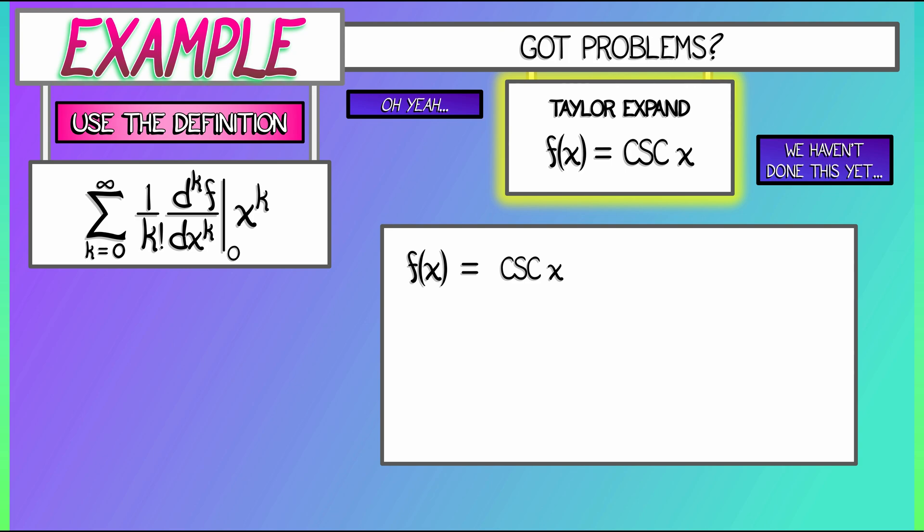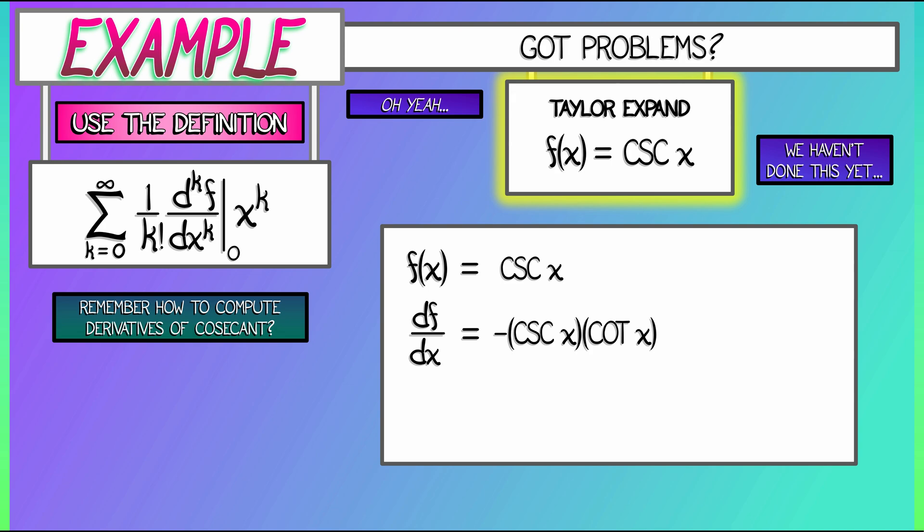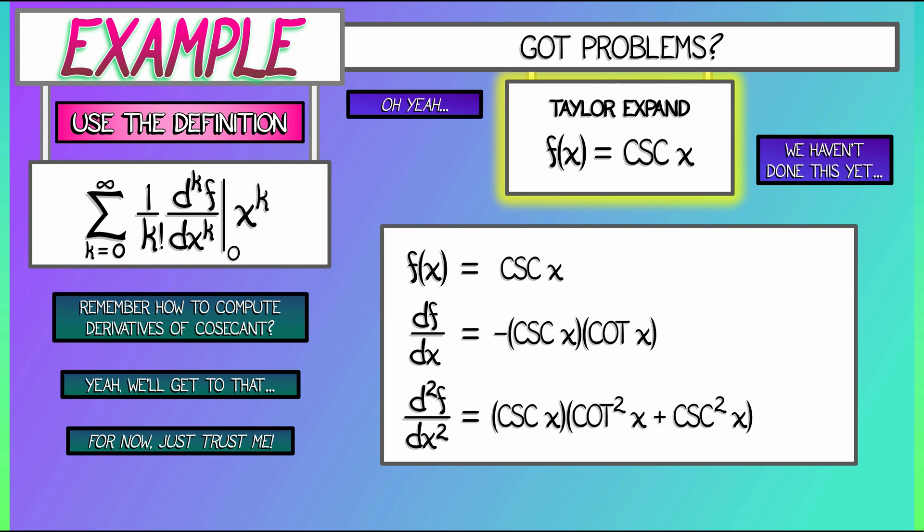We got to take our function, cosecant. Got to take the derivative. Oh, I'm not sure I remember. I think I memorized that once. What is that? It's, oh yeah, minus cosecant times cotangent. Okay, but then I got to do the higher derivatives. We'll get to that and how to compute those things for now. Just trust me. The second derivative is cosecant times quantity cotangent squared plus cosecant squared.